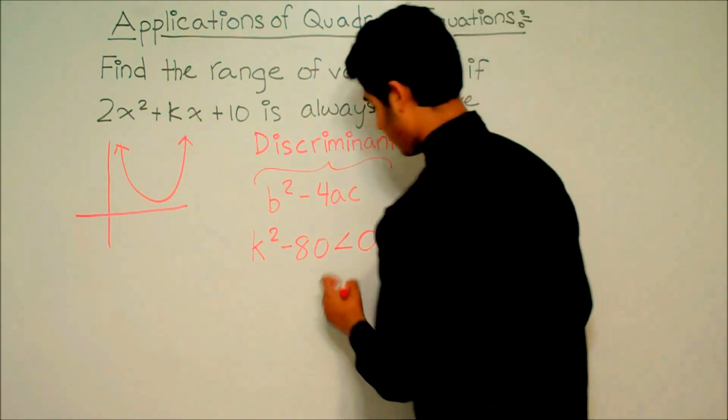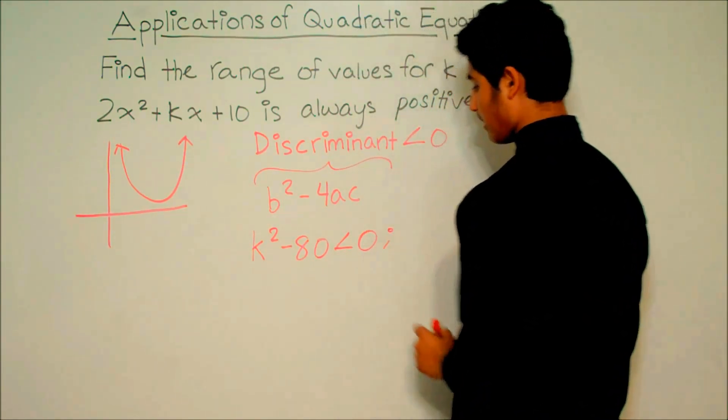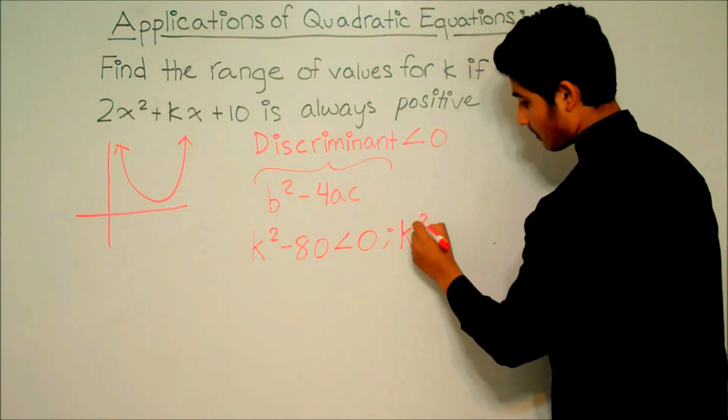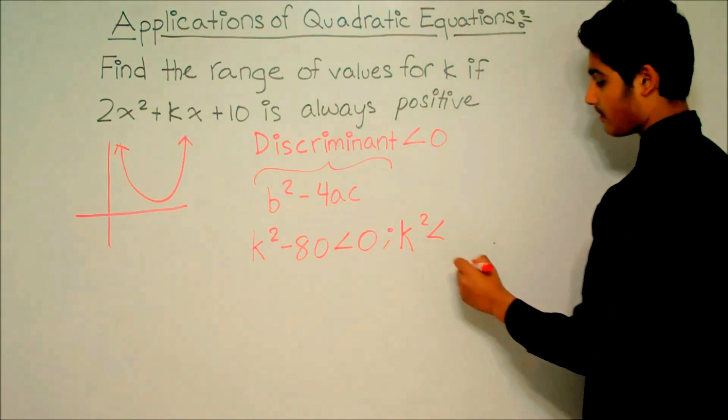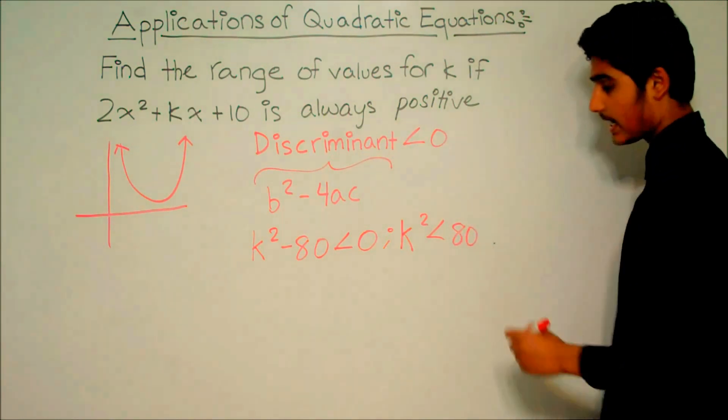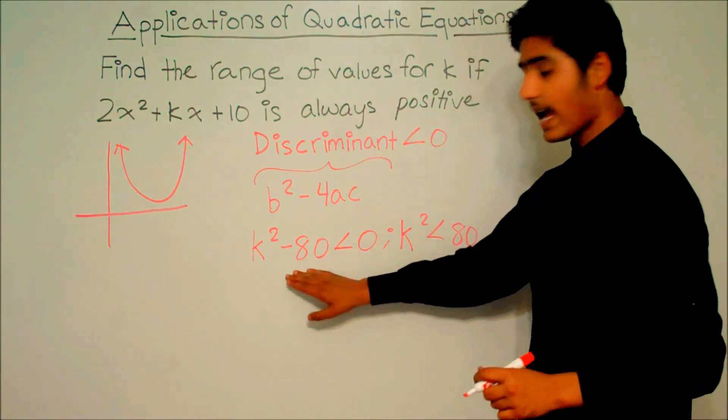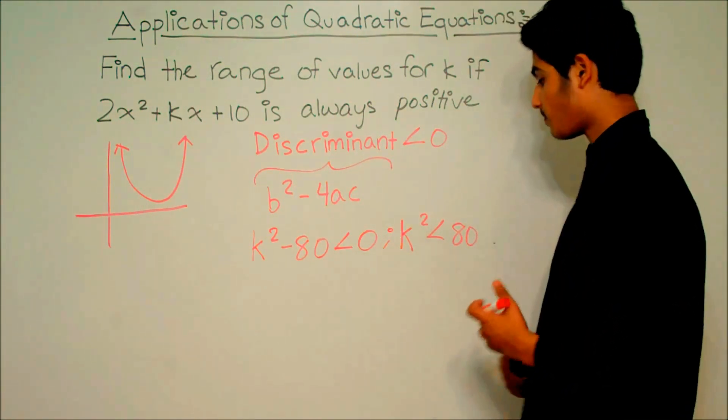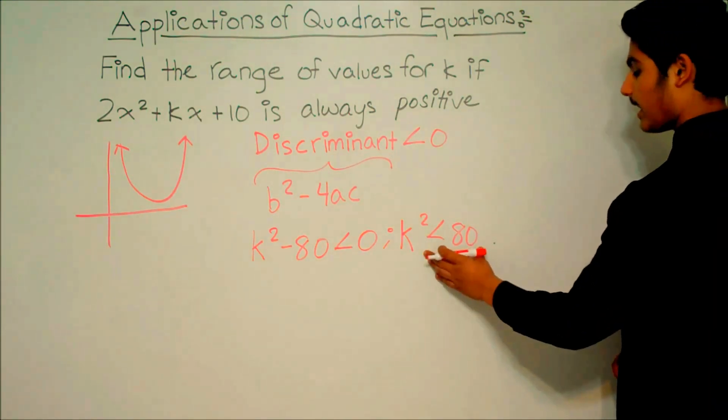So that means k² is less than 80. Because to get k² by itself, we have to add 80 to both sides. So k² is less than 80.